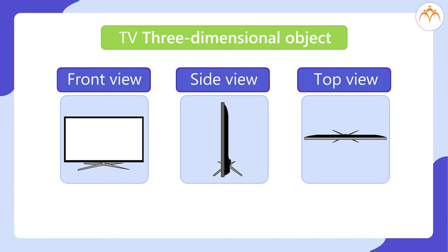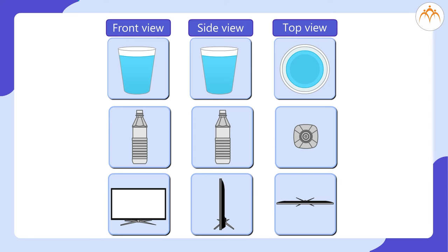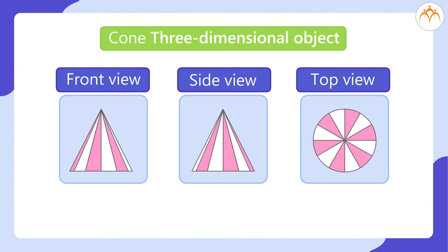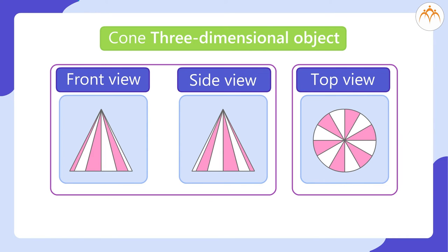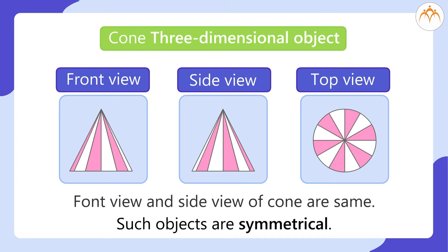Consider this cone. When viewed from front or from side, cone looks like this, and from above, cone looks like this. Front view and side view of cone are the same. Such objects are symmetrical.